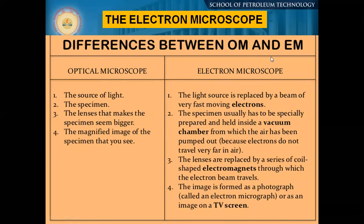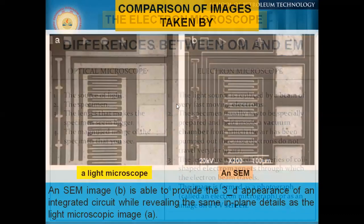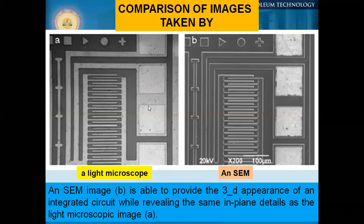If we look at an image here, you can easily understand it is actually an integrated circuit. The left side shows a light microscope image, whereas the right side shows the scanning electron microscope image. You can see the difference — in the scanning electron microscope, you can get the 3D appearance of the circuit, whereas in the normal light microscope, you cannot. That is why, to understand materials in proper shape and to characterize them properly, we use the scanning electron microscope.